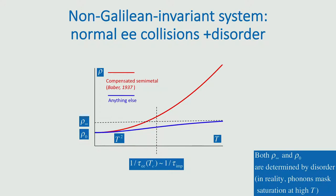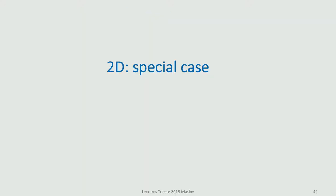If you have a compensated semimetal without umklapp, that's the only way when the resistivity starts from the residual value and then takes off in the Fermi liquid as T squared, with the residual part and T squared part adding as prescribed by Matthiessen's rule. If I have anything else — either a multiband metal that is not compensated, or just an anisotropic Fermi surface — the resistivity varies between two limits, which by themselves are controlled by disorder but differ depending on other band structure parameters.